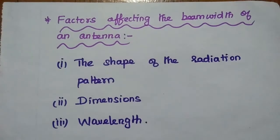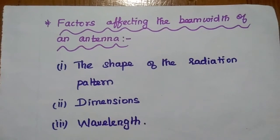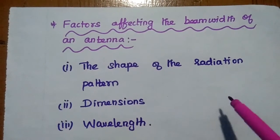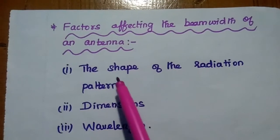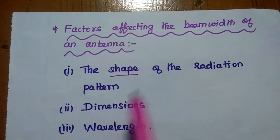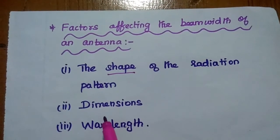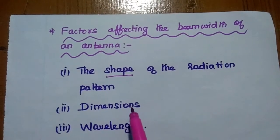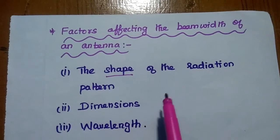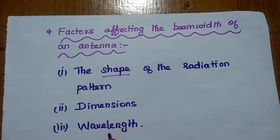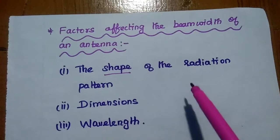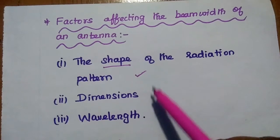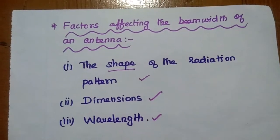The factors affecting the beam width of an antenna are: first, the shape of the radiation pattern — since beam width is an angular separation, the shape of the radiation pattern directly affects it; second, the dimensions of the antenna, because the radiation pattern depends on antenna dimensions; and third, the wavelength. These three factors — shape, dimensions, and wavelength — affect the beam width.